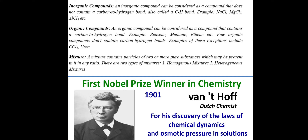In organic compounds, the carbon-hydrogen bond is the key feature. Most organic compounds contain a C-H bond which may be saturated (single bond) or unsaturated (double or triple bond). For example, benzene has a double bond and acetylene has a triple bond. There are exceptions: carbon tetrachloride (CCl₄) and urea (NH₂CONH₂, also named aminomethanamide) do not contain a carbon-hydrogen bond.